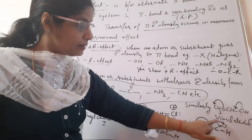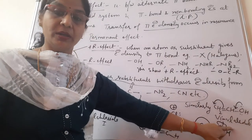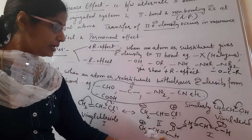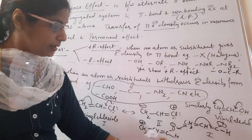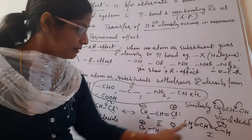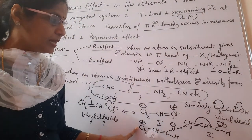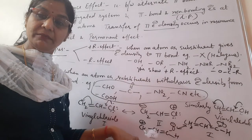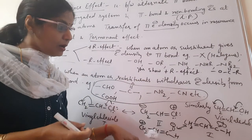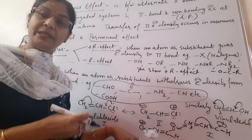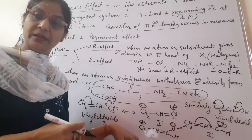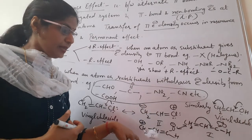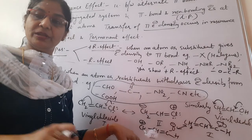The pi bond shifts towards the aldehydic group and then further towards the oxygen. As a result, the second resonating structure shows oxygen having a negative charge and the adjacent carbon having a positive charge. The positive and negative charges arise because one electron becomes less in the valence shell giving positive charge, and if one electron increases in the valence shell, it results in a negative charge.